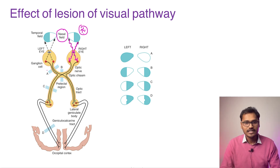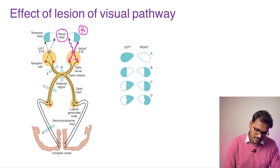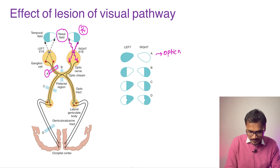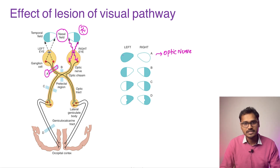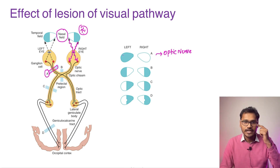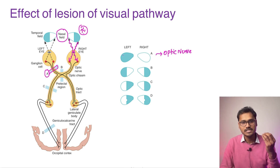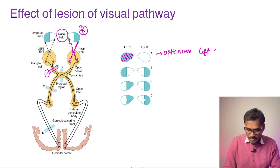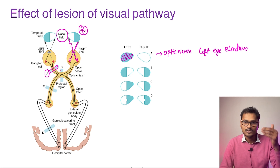Lesion A is at the level of the optic nerve. Here we have cut the left eye optic nerve. No impulses can come from the left eye, so the result is complete blindness of the left eye. This is straightforward — the optic nerve of the left side is cut, so nothing from the left side can be interpreted.